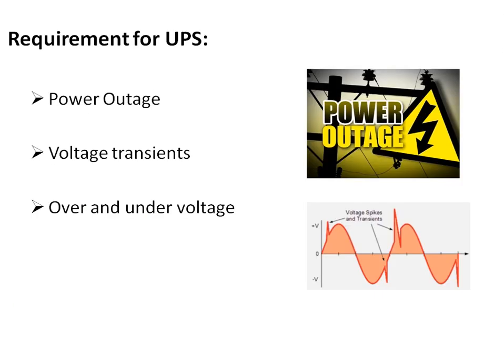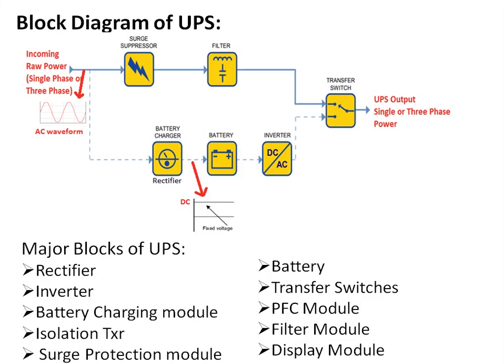The common requirements for a UPS are: first, power outage support — whenever the transmission power fails, the UPS provides backup power. Second, clean power — providing power free from voltage transients, spikes, sags, over-voltage, or under-voltage. So for providing clean power to the load, a UPS is also required.